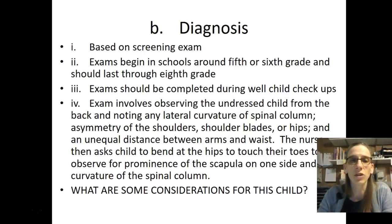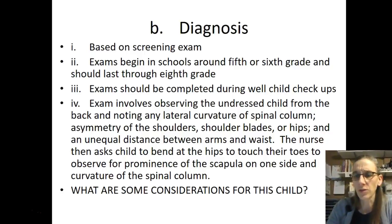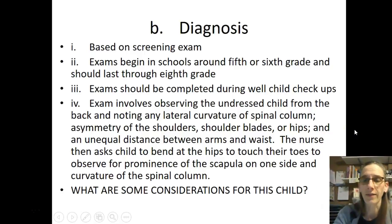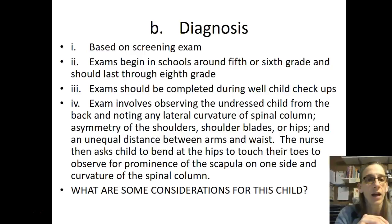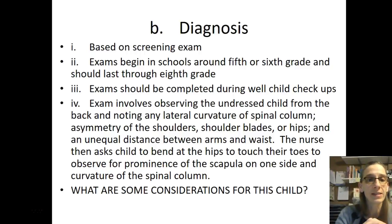Diagnosis is based on screenings and exams, beginning in school usually around the fifth or sixth grade through eighth grade, and should also be completed during well-child checkups. Exams involve observing the undressed child from the back, noting any lateral curvature of the spinal column, asymmetry to the shoulders, elevation of the hips, and unequal distance between the arms and the waist. The nurse asks the child to bend at the hips to touch the toes and observes for prominence of the scapula on one side and curvature of the spinal column.